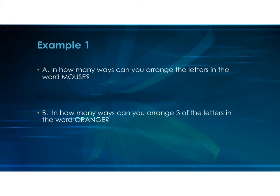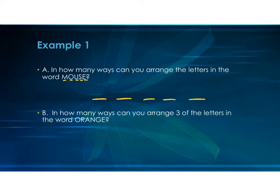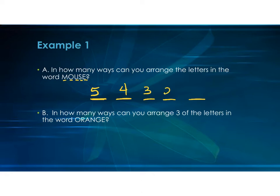When we talk about permutations, permutations means that when we make our combinations, order matters. For example, in how many ways can you arrange the letters in the word MOUSE? I count five letters in the word MOUSE, so I'm going to make five blank lines. For my first slot I have five choices of letters — M, O, U, S, or E. Once I place a letter, I can't use it again, so for my second spot I only have four choices, then three, then two, then one.